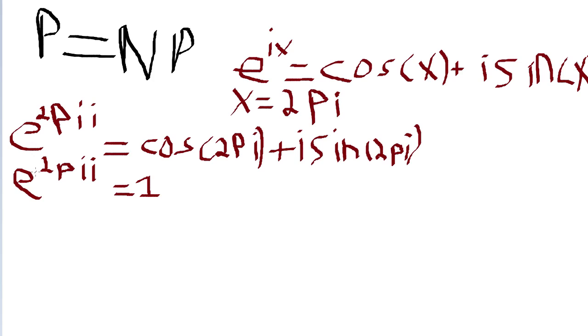Alright, so now let's just apply the natural logarithm to both sides. So if you apply the natural logarithm to e, you get what's ever in the exponent. So you have 2 pi i is equal to the natural logarithm of 1, which is just 0.